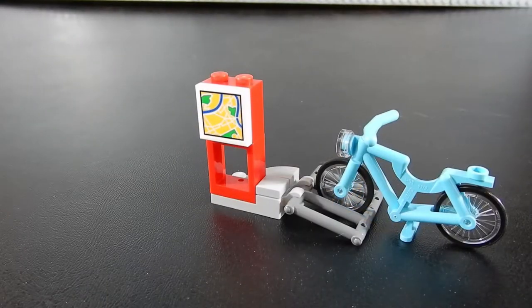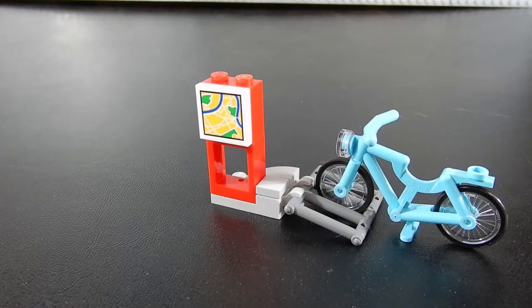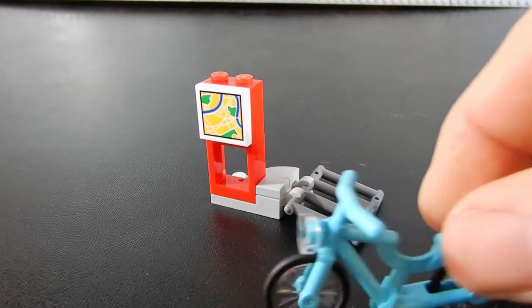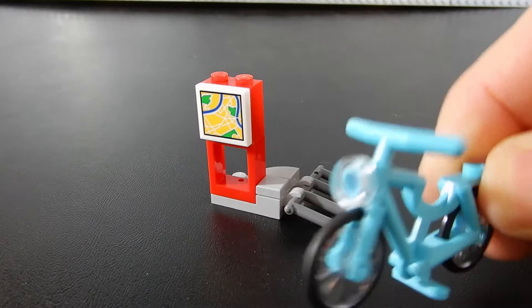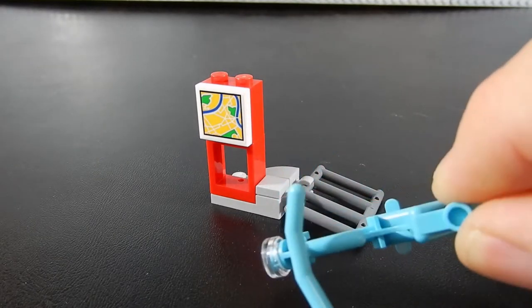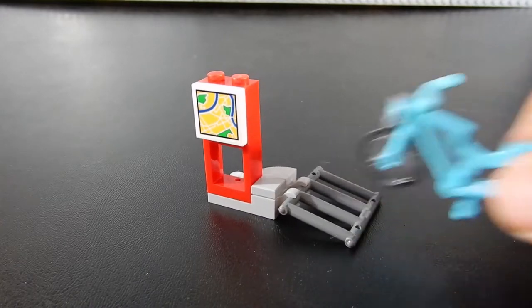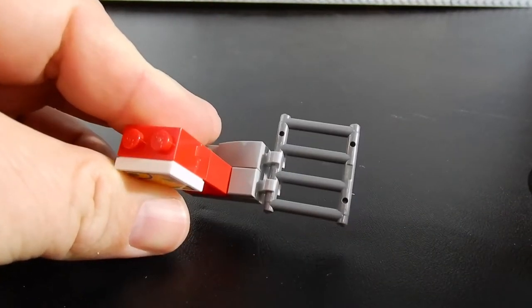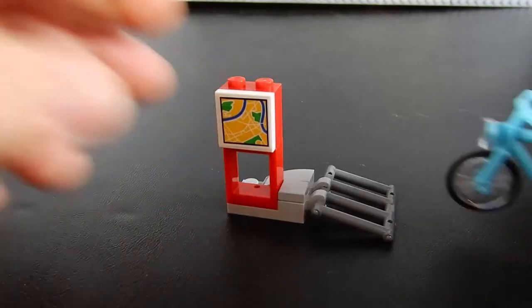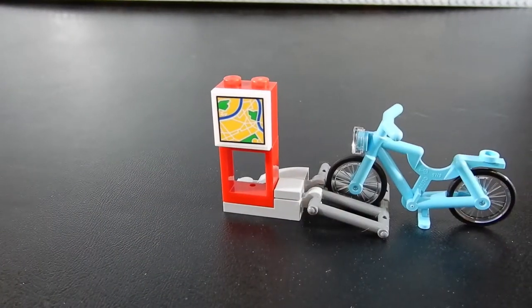And finally my favorite part. This is the bicycle and bicycle rack. The bicycle is similar to what we've seen before. We've got a little headlight on the front. The minifigure can stand in the middle there. The bike rack itself is just a little prison bar ladder type piece. And the wheel just sits in there and it holds the bike up.